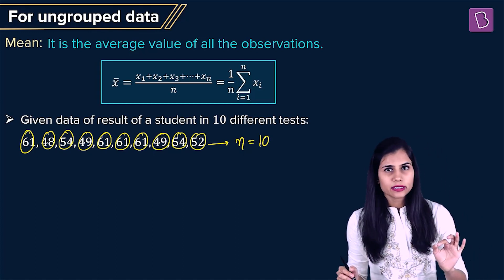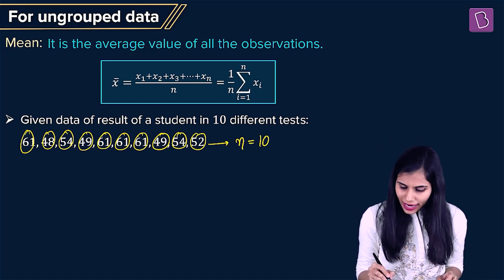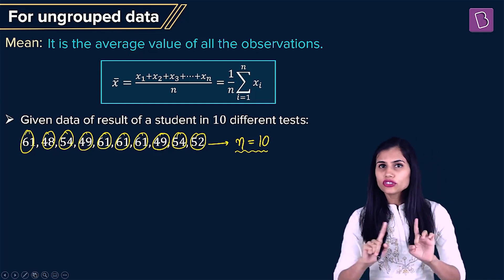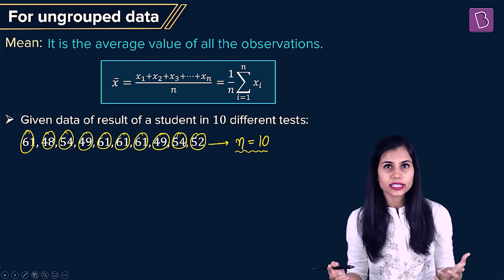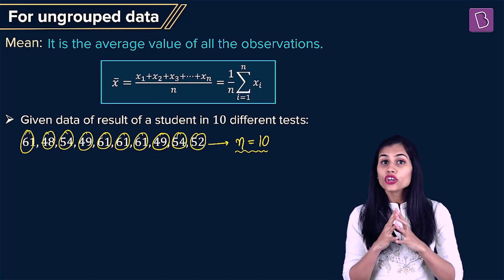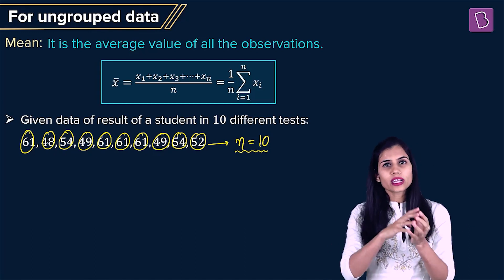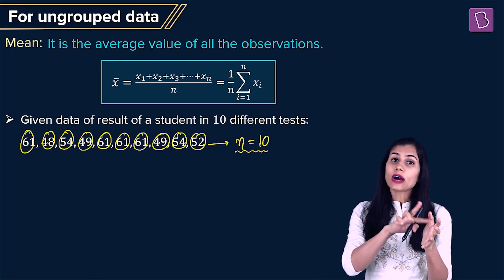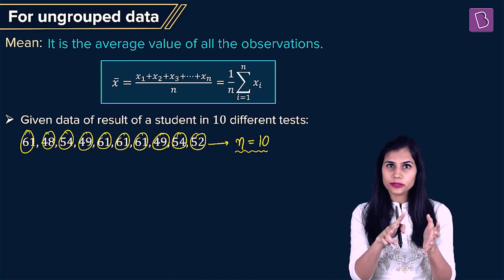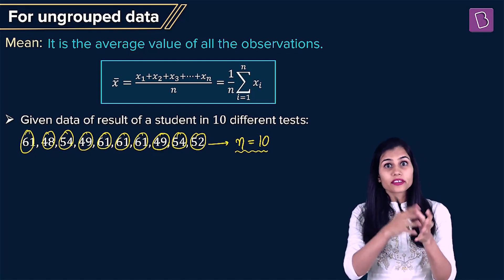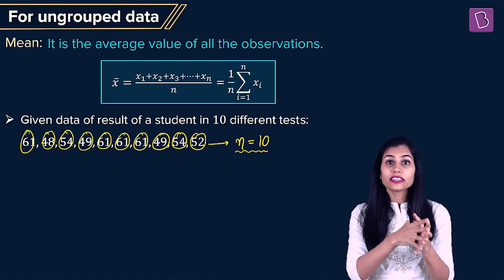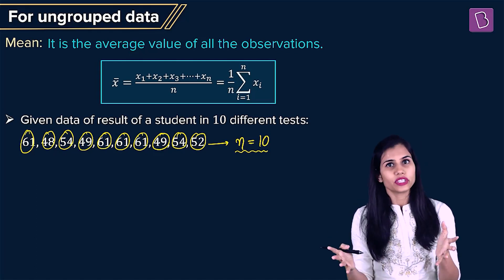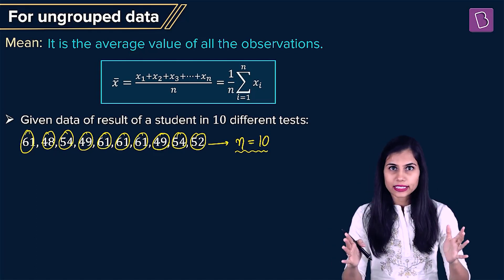A little disclaimer: when I am computing the number of observations, I am not just counting the distinct observations in the list. If there's any observation which is occurring twice, I'm counting it as two terms. If there's any observation which is occurring thrice, I'm counting it as three terms. Keep this in mind.